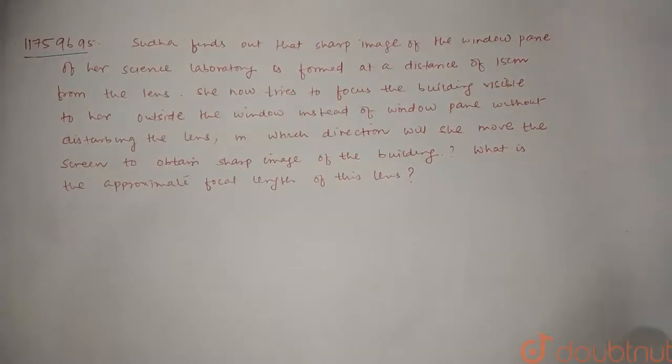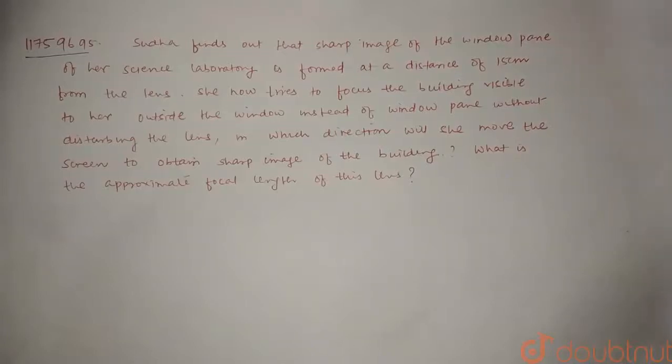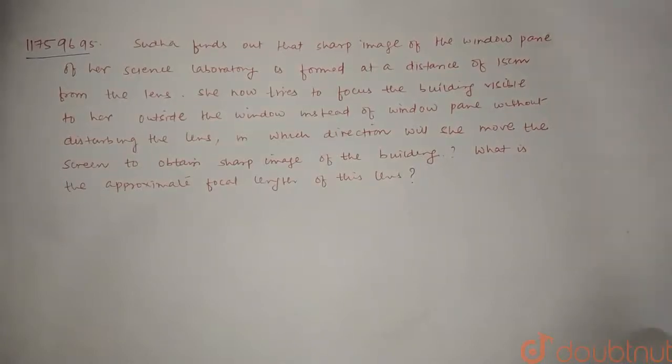She now tries to focus the building visible to her outside the window instead of the window pane, without disturbing the lens. In which direction will she move the screen to obtain sharp image of the building? This is the first part. The second part has been asked: What is the approximate focal length of this lens?